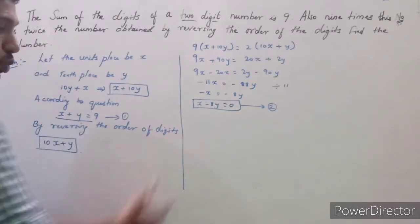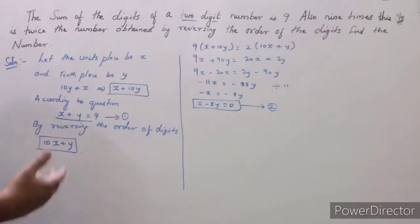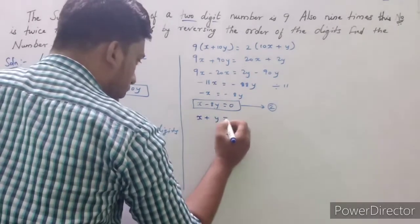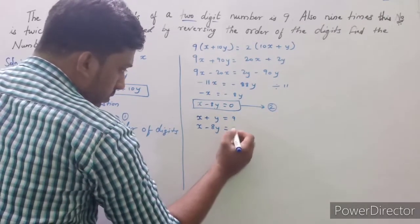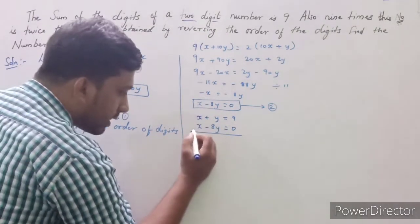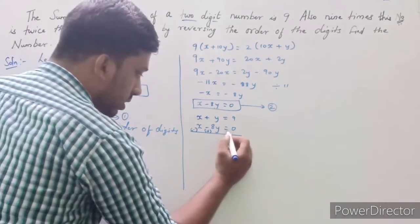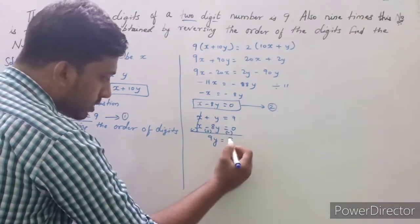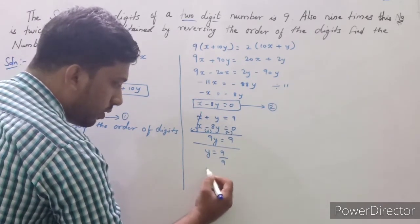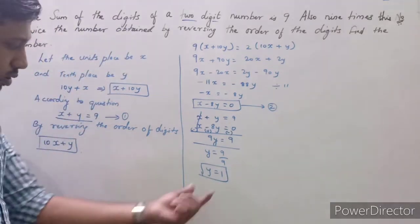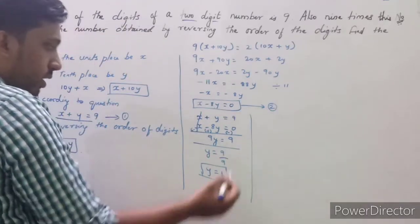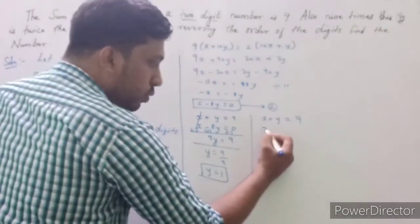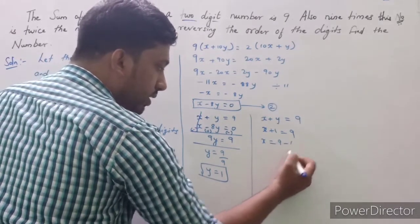Now we have Equation 1: x + y = 9, and Equation 2: x − 8y = 0. Subtracting Equation 2 from Equation 1: the x terms cancel, giving 9y = 9, so y = 1. Substituting y = 1 into Equation 1: x + 1 = 9, therefore x = 8.